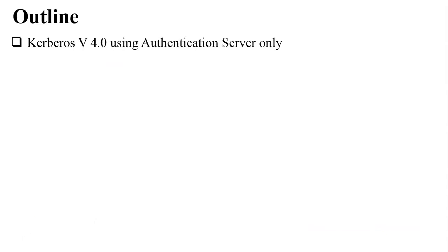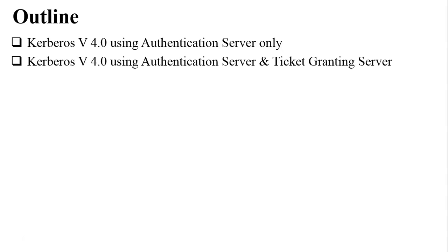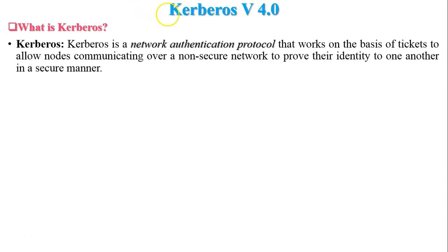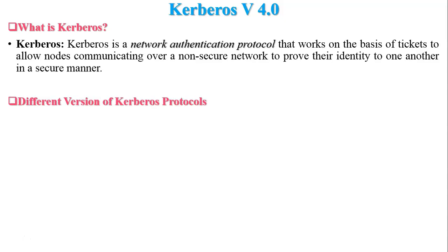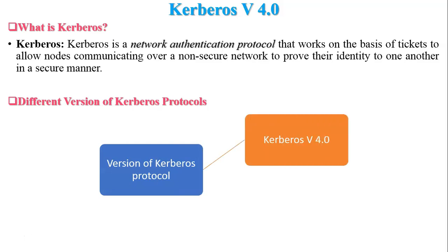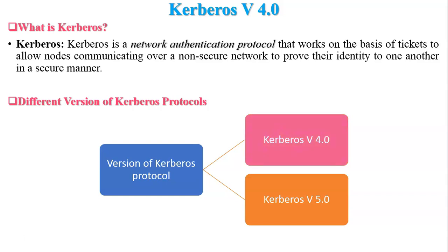The outline of this video covers two topics: first, Kerberos version 4.0 using authentication server only, and second, Kerberos version 4.0 using authentication server and ticket granting server. Kerberos is a network authentication protocol in which all the nodes communicate with each other through a non-secure network and prove their identity to one another in a secure manner. There are two versions: version 4.0 and version 5.0, and in this video we discuss version 4.0.